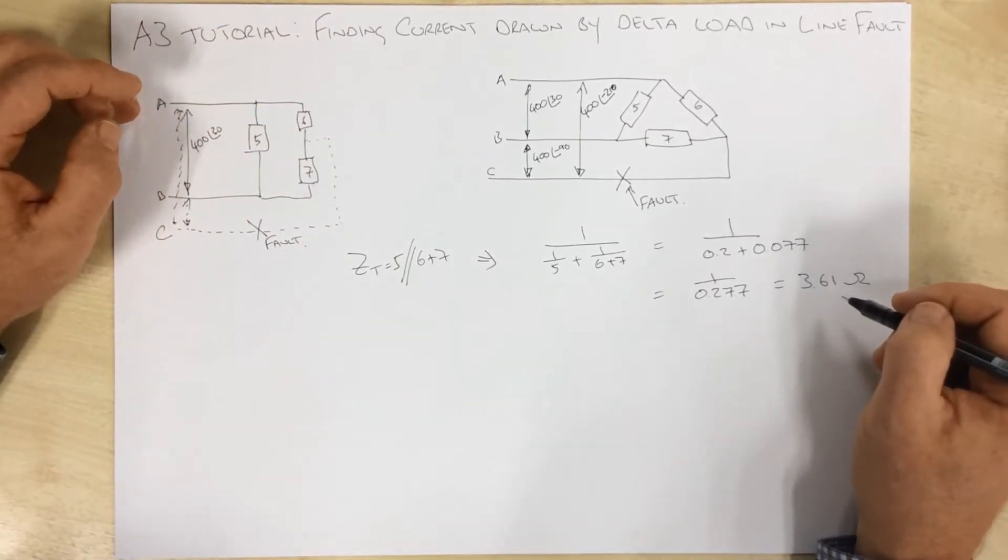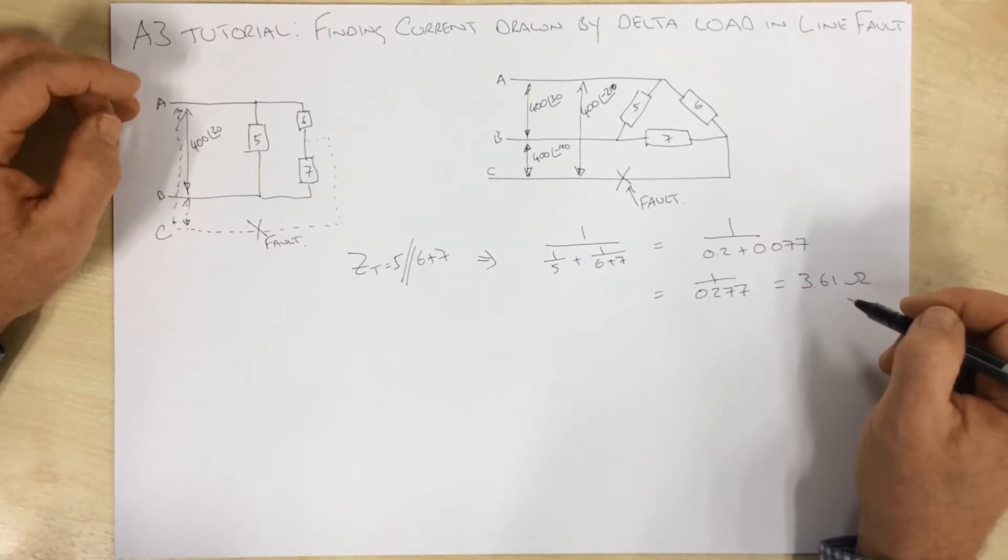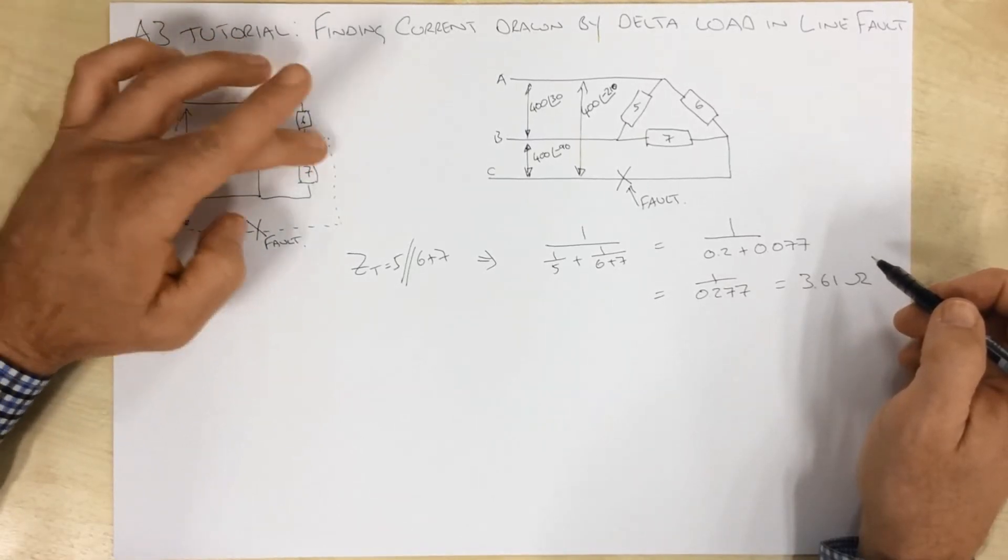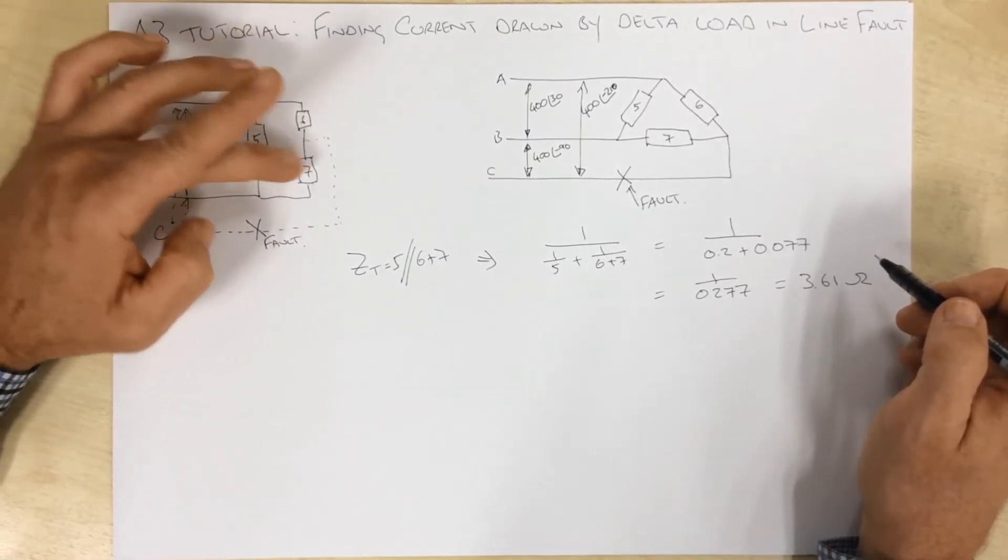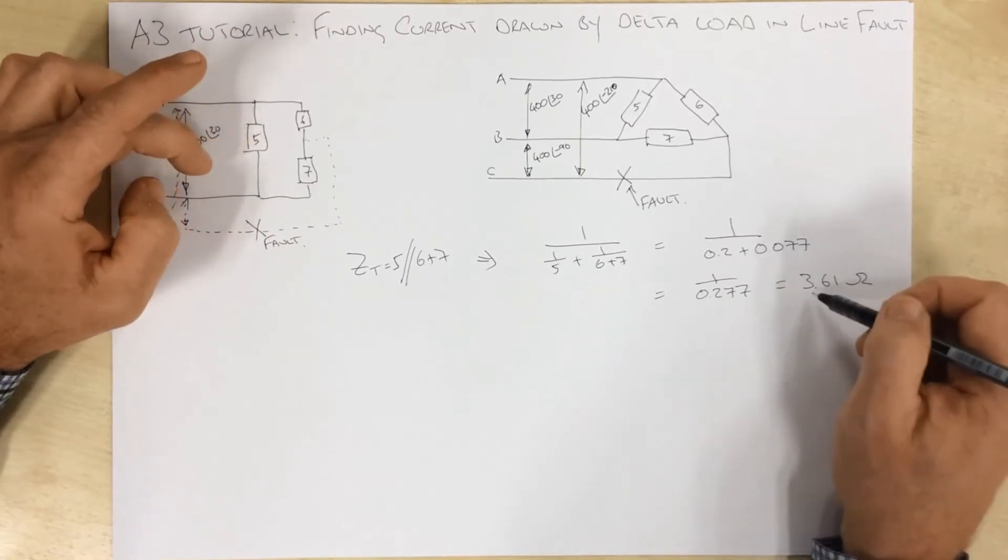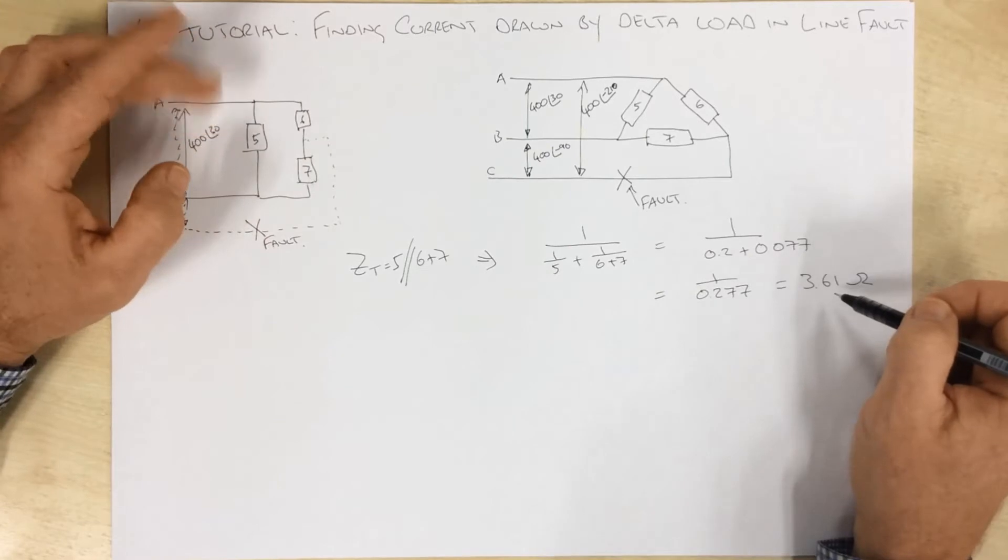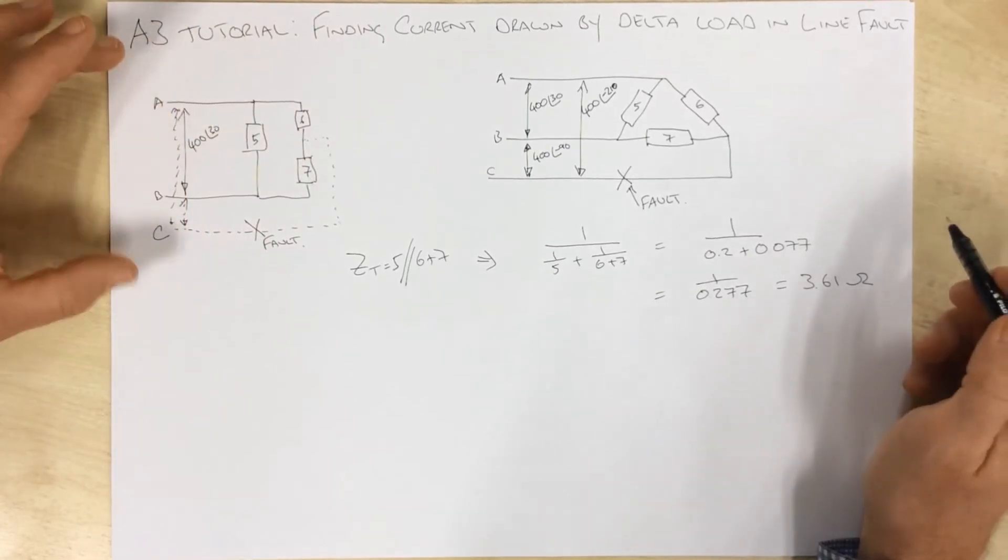At this stage we can do our first, what one could call a rationality check, and you know that the total impedance of something in parallel should be less than either of those values, and it is: 3.6 is less than 5, 3.6 is less than 13, so that suggests that our maths is not wrong.